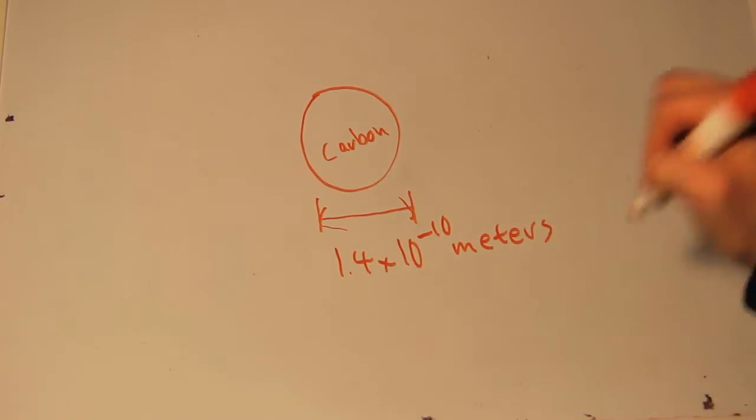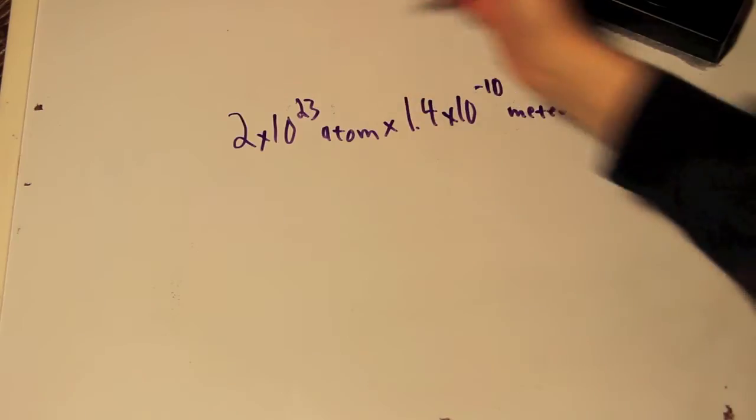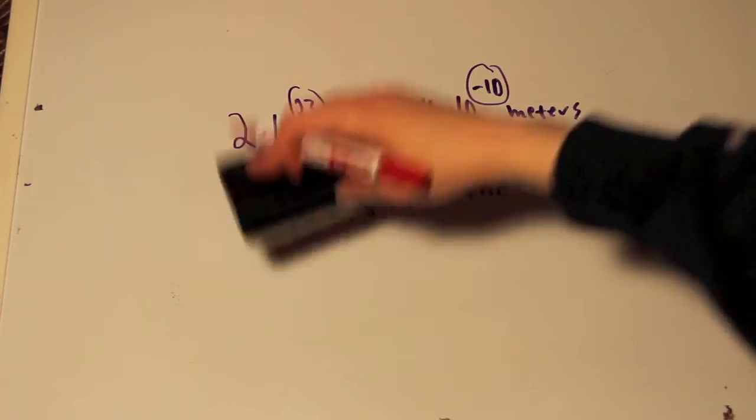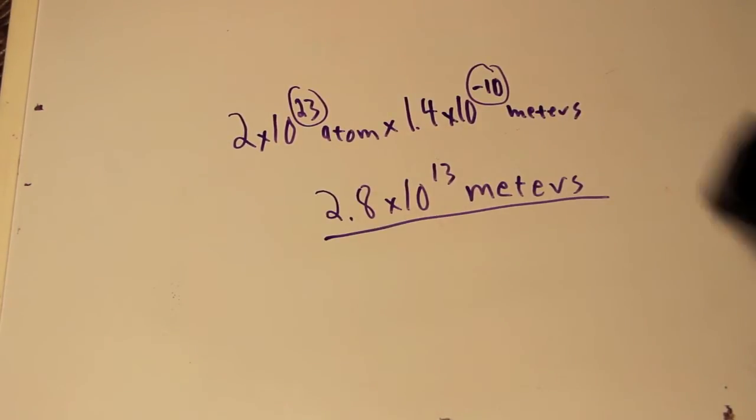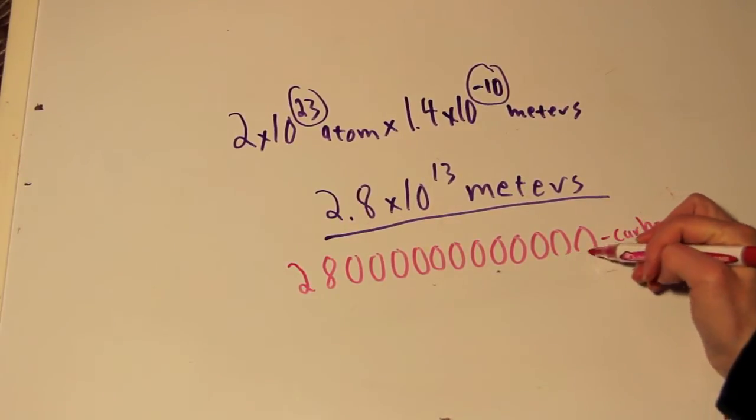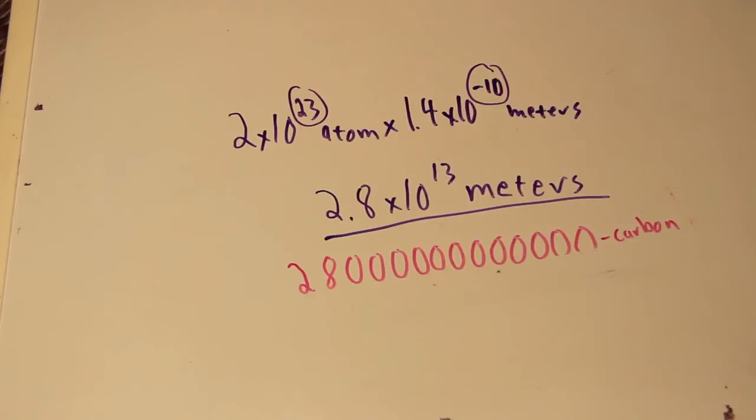If we multiply the number of atoms in a piece of paper by the diameter of a carbon atom, we will see how far they can stretch. A single piece of paper can extend 2.8 times 10 to the 13 meters. The moon is only 3 times 10 to the 8 meters away. This means one piece of paper can go to the moon and back over 36,000 times.